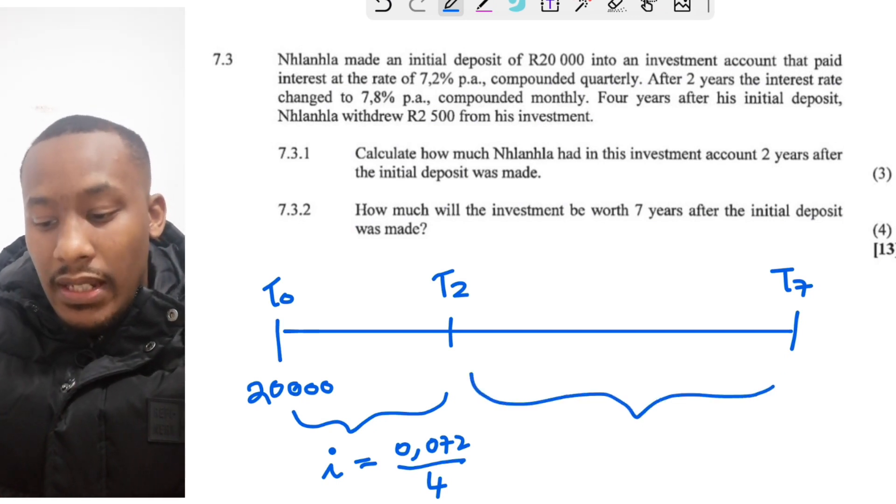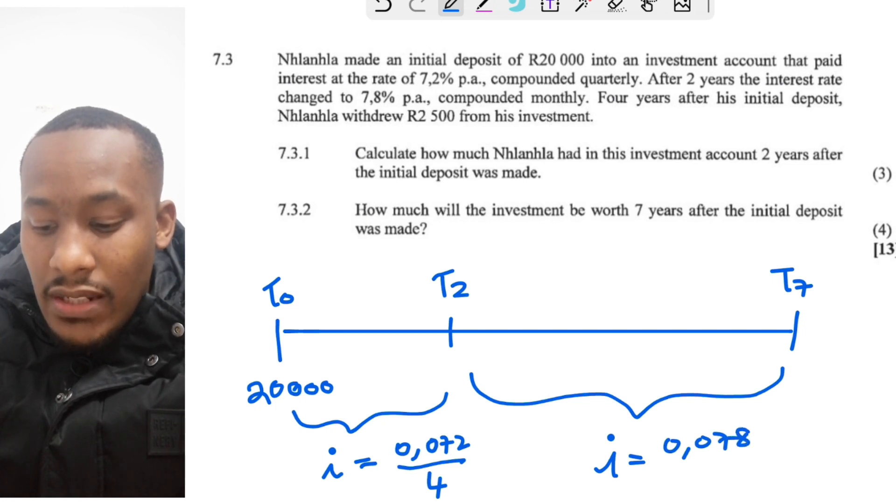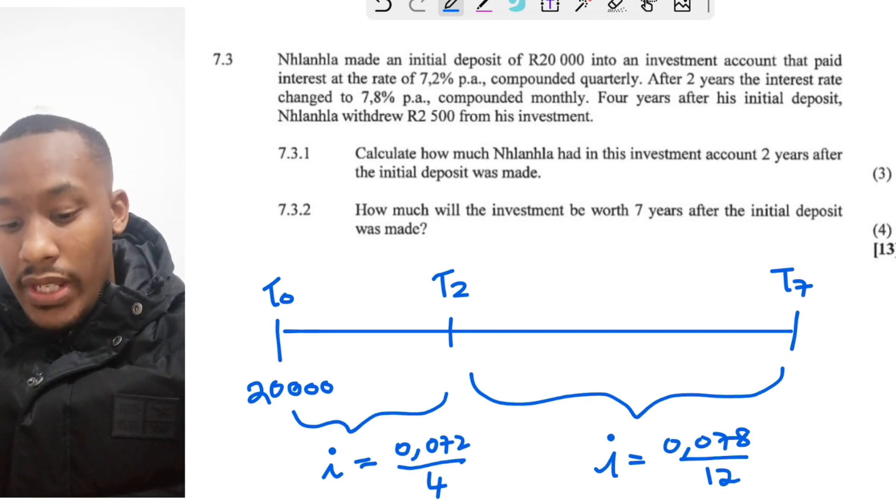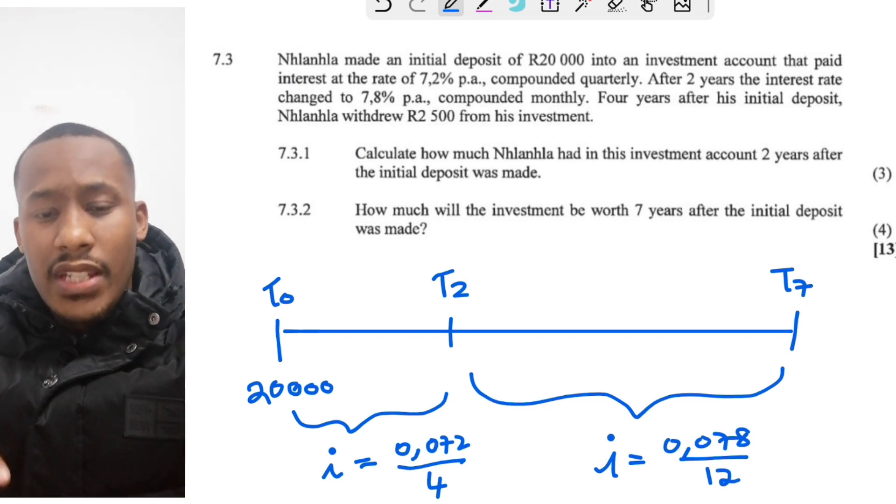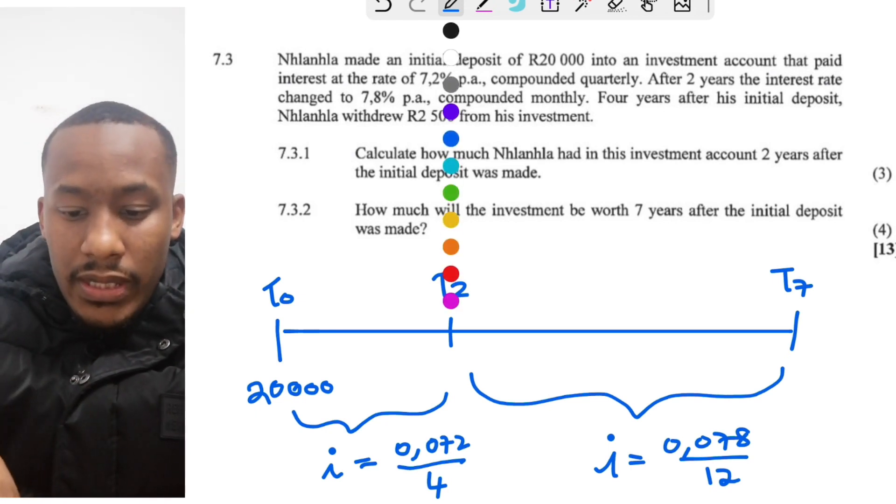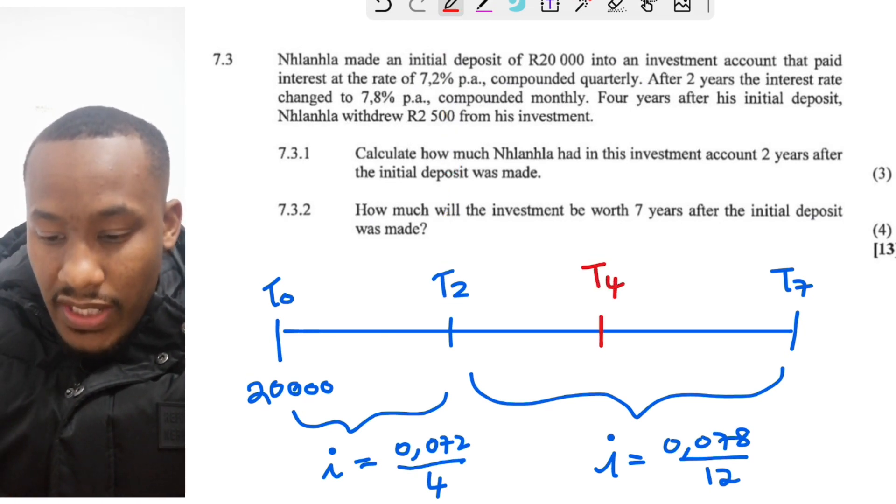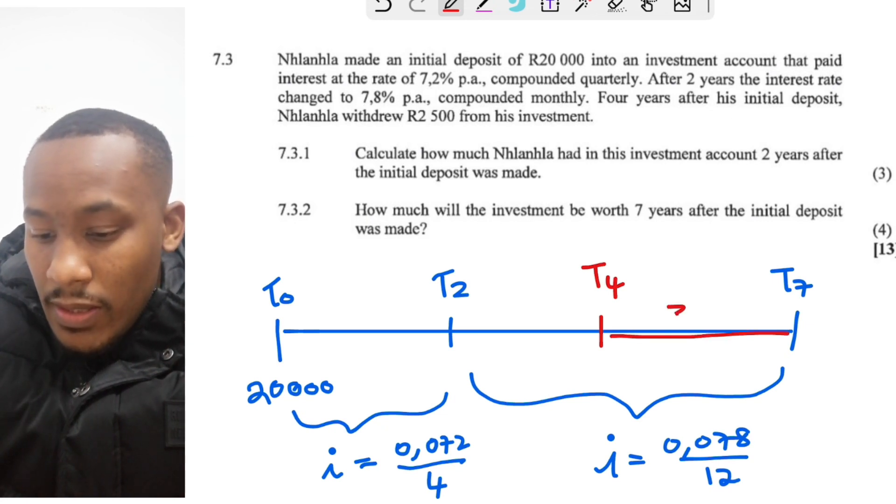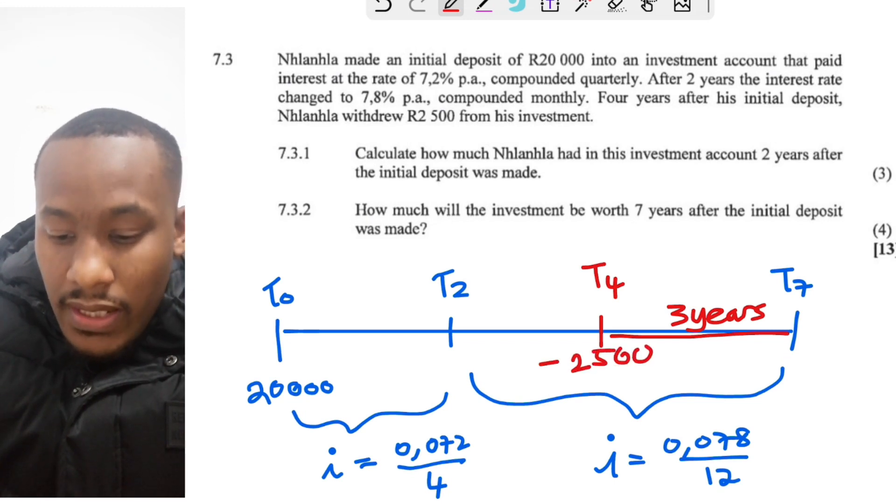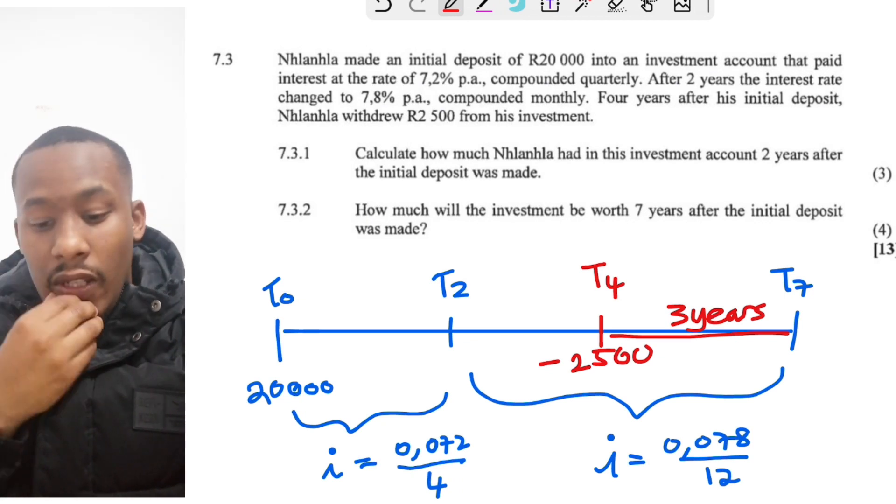And then for the remainder of the period, the investment earned an interest rate of 0.078 compounded monthly. So this is a better interest rate because it's more and it's compounding more as well. His previous interest only compounded four times a year, whereas this one compounds 12 times a year, so much better. And also the withdrawal. The withdrawal happened four years into the investment, so it's like for the last three years there's a withdrawal being made of 2,500. Let me indicate that with a minus 2,500, and that's for the remaining three years.